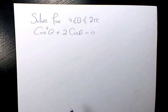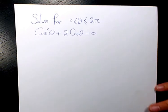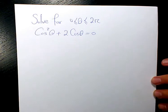The equation is cos²θ + 2cosθ = 0. So in order to solve this equation, the first thing I need to do is start with factoring.